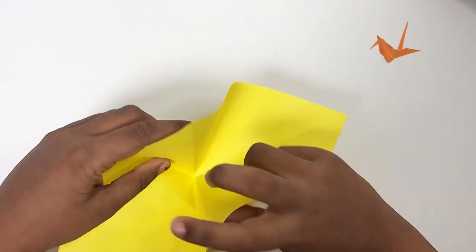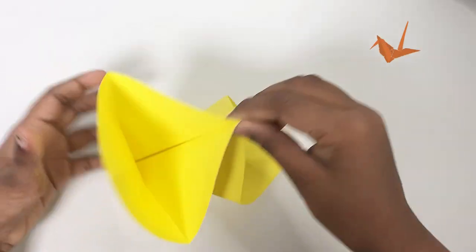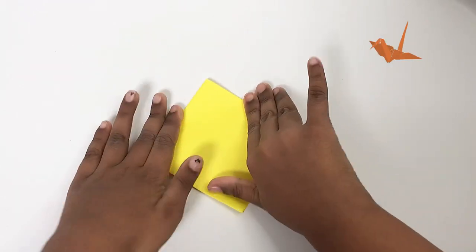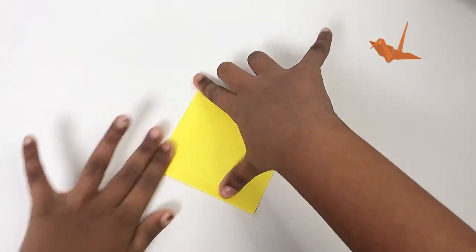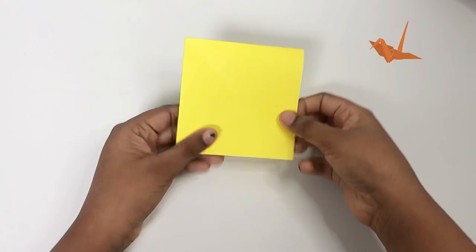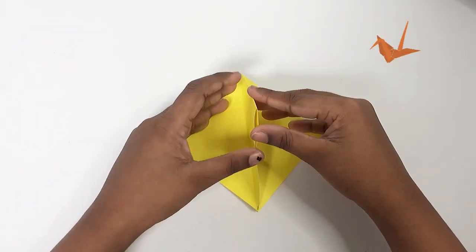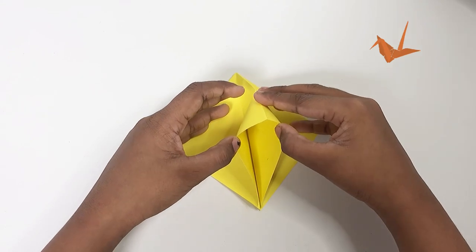Now, we need to take these two corners, bring them up and then press it down like this. Then you can see, like our tulip, we have some open parts, right?